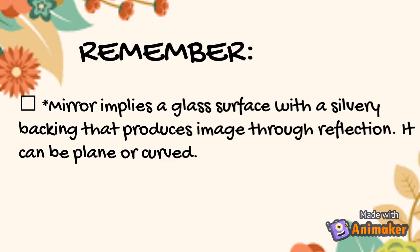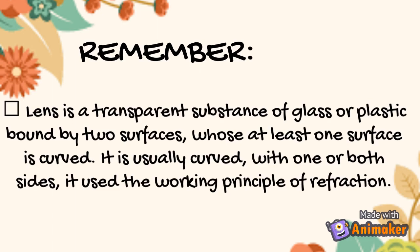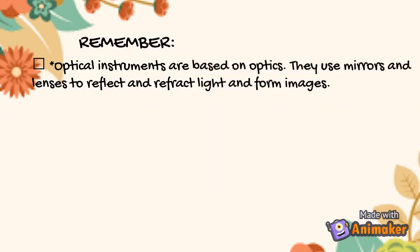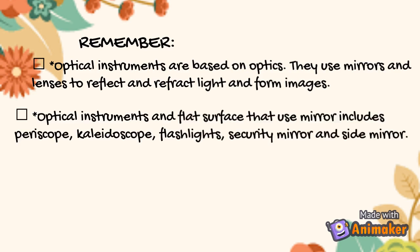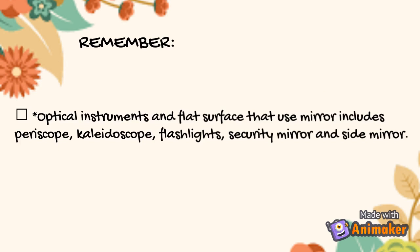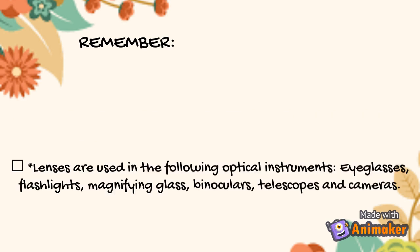Now let us summarize what we have learned today. A mirror is a glass surface with a silvery backing that produces images through reflection — it can be plain or curved. A lens is a transparent substance of glass or plastic bound by two surfaces, at least one of which is curved, and it works on the principle of refraction. Optical instruments are based on optics and use mirrors and lenses to reflect and refract light to form images. Optical instruments that use mirrors include periscopes, kaleidoscopes, flashlights, security mirrors, and side mirrors. Lenses are used in eyeglasses, flashlights, magnifying glasses, binoculars, telescopes, and cameras.